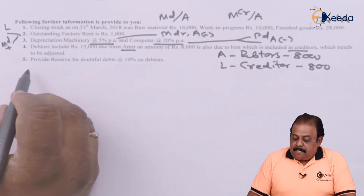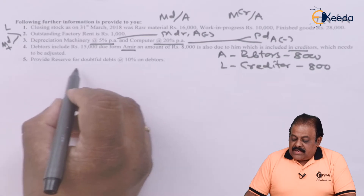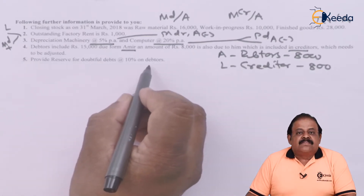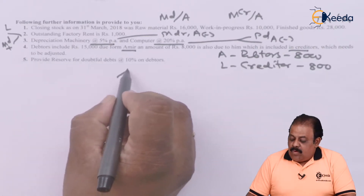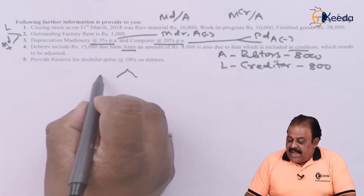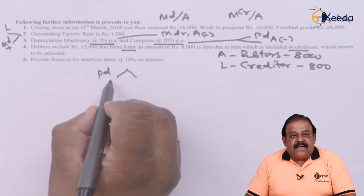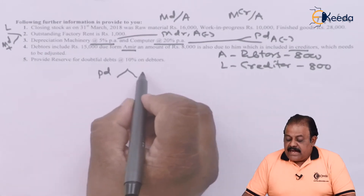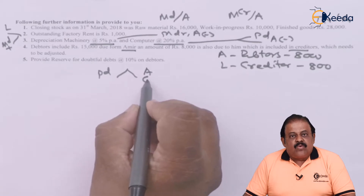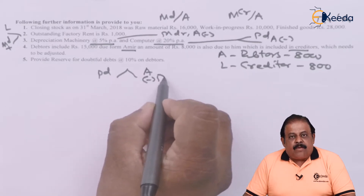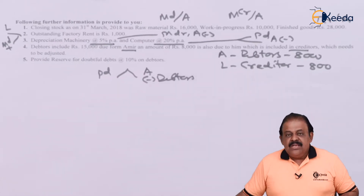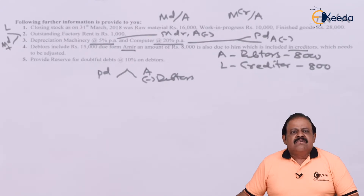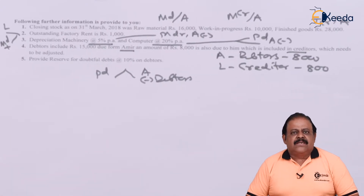Last adjustment: provide reserve for doubtful debts at 10% on debtors. New RDD — one effect: profit and loss account debit. Second effect: in balance sheet, deduct this amount from debtors. With this, we have discussed all adjustments as well as all trial balance items.